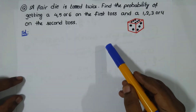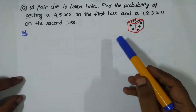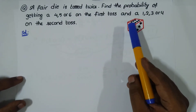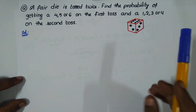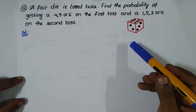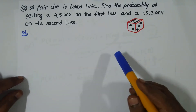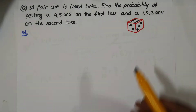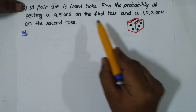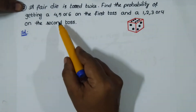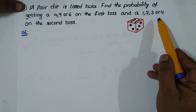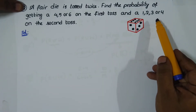Greetings. One of the basic problems from probability theory is a rolling a fair die kind of problem. This kind of problem is quite common in various competitive examinations. A fair die is tossed twice — find the probability of getting a 4, 5, or 6 on the first toss and a 1, 2, 3, or 4 on the second toss.